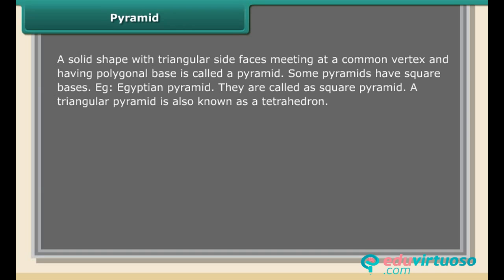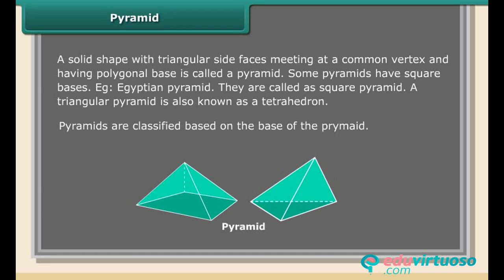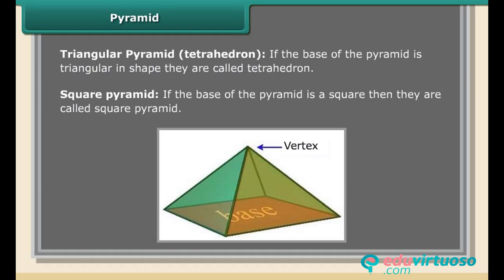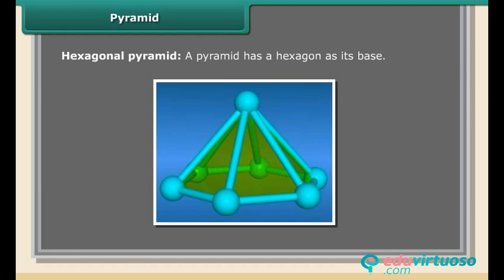A triangular pyramid is also known as a tetrahedron. Pyramids are classified based on the base of the pyramid. Triangular pyramid (tetrahedron): If the base of the pyramid is triangular in shape, they are called tetrahedron. Square pyramid: If the base of the pyramid is a square, then they are called square pyramid. Hexagonal pyramid: A pyramid has a hexagon as its base.